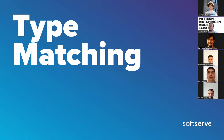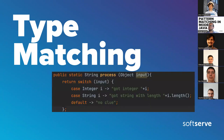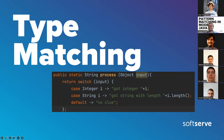There is a question in the chat: can you make a type-based switch without returning anything? Yes, I just made that example — you can use void and just do a System.out.print instead of returning a value.